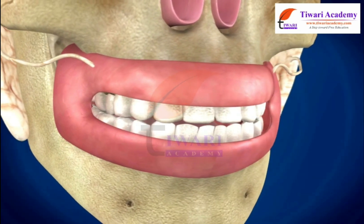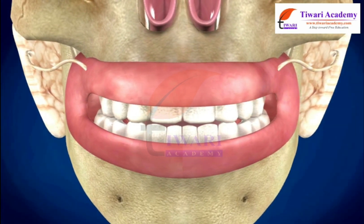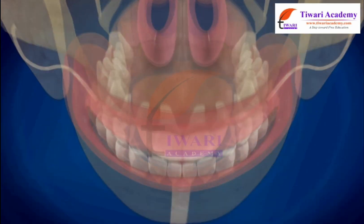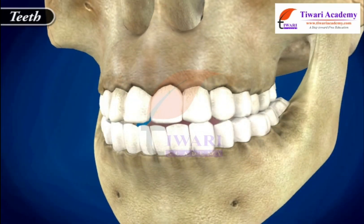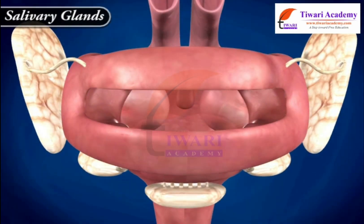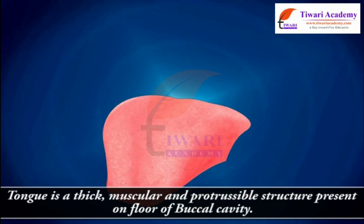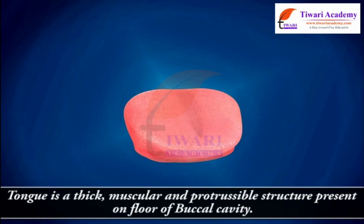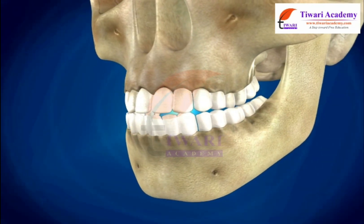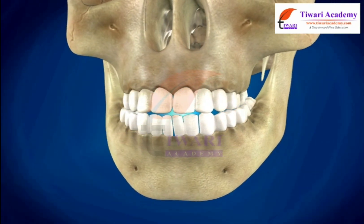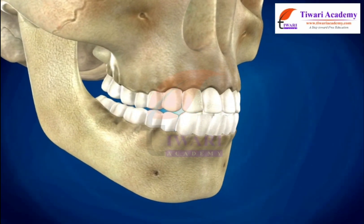Buccal cavity is the second organ of the human digestive system. Buccal cavity has two main structures in it: tongue and teeth. Salivary glands are also present. Tongue is a thick, muscular and protrusible structure present on the floor of the Buccal Cavity. Teeth are present in both jaws of human beings, embedded in the sockets of jaw bones. In adult man, there are 32 teeth — 16 in each jaw.